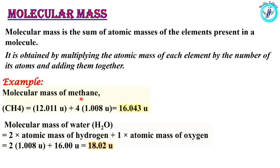Molecular mass of water: two hydrogen atoms and one oxygen atom. That is 2 × 1.008u plus 16u, which equals 18.02u. That is the molecular mass of water.